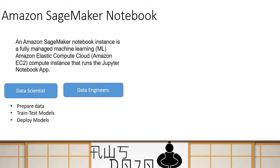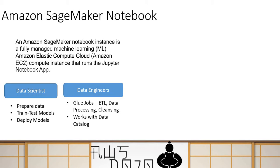Data scientists use Jupyter Notebook for all machine learning related tasks, like preparing your data, training and testing your models, and deploying your models. Data engineers, however, use it for a different set of operations — generally they create different types of Glue jobs for ETL purposes, processing or cleaning data. These Glue jobs then work with other services like Lake Formation and AWS Glue, working with the data catalog to fetch and write data back.